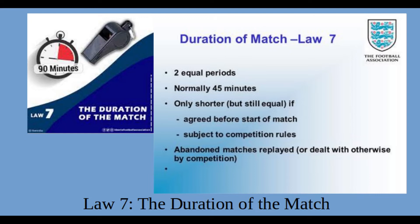The fourth official indicates the minimum additional time decided by the referee at the end of the final minutes of each half. The additional time may be increased by the referee but not reduced. The referee must compensate for a timekeeping error during the first half by changing the length of the second half.